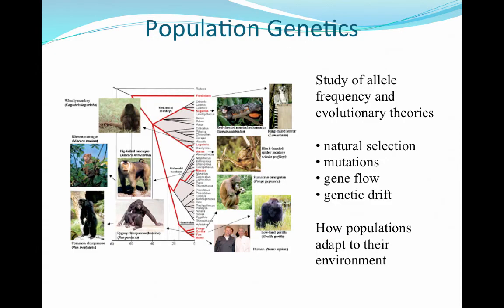Population genetics is studying the allelic or genotypic frequency and evolution in a population. We can look at things such as natural selection, mutations, how gene flow moves from one generation to the next, and genetic drift. Population genetics is really the study of how individuals adapt to their environment.